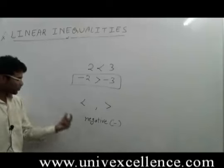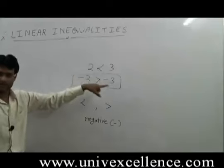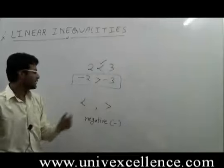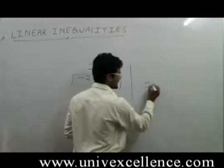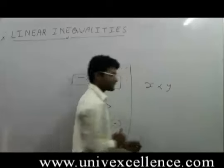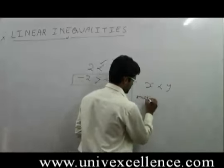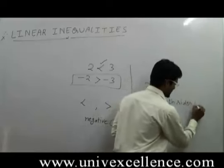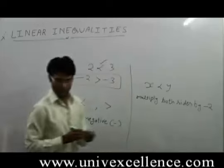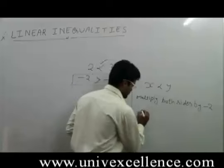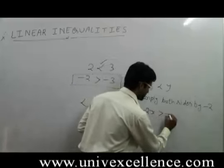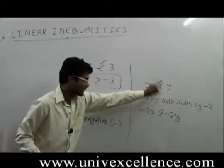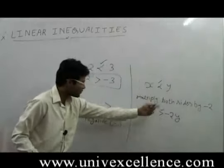So the rule is: when you multiply a negative sign on both sides of any inequality, you have to reverse that sign. If the equation is written as x < y, and you multiply both sides by -2, then -2x will be greater than -2y. The sign is reversed - here x was less than y, but now the sign is reversed.